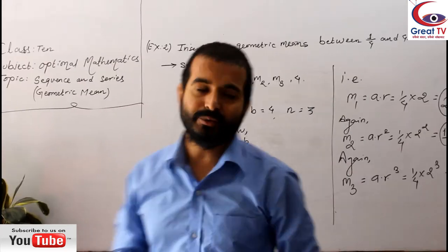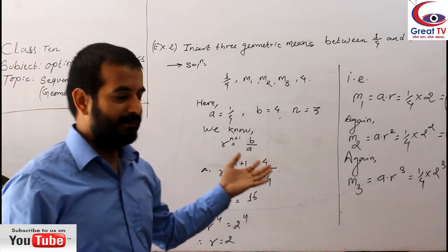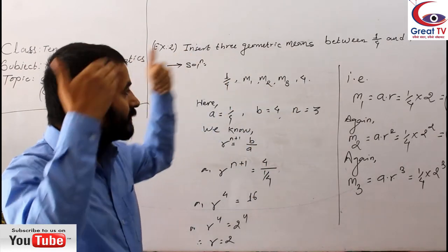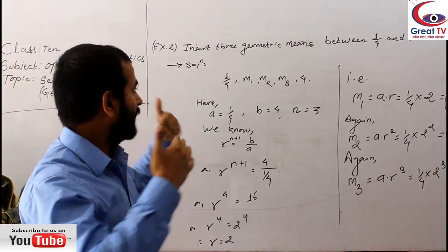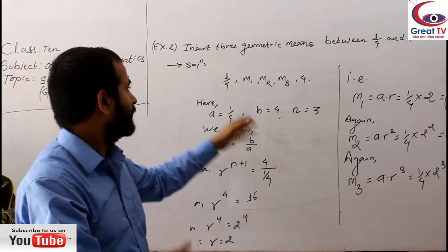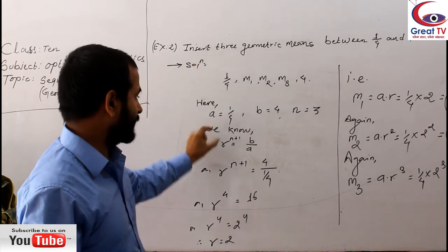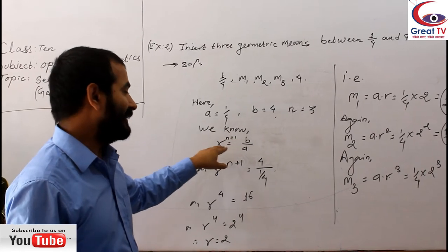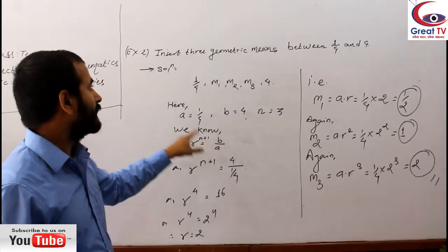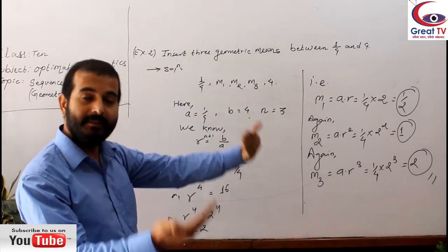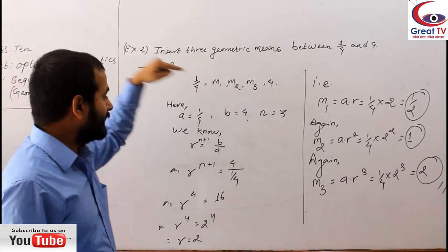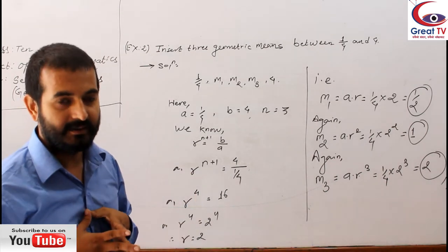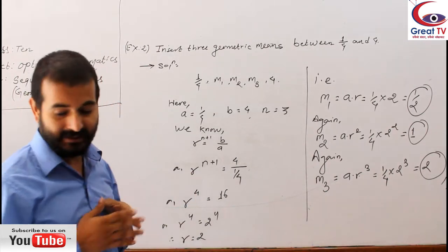So my dear students, how do you got this? So if you have still confused, please just rewind the previous video, previous class, and come to this class. And you shouldn't forget when you use this formula R^(N+1) = B/A, it is not used every time. When you have to insert multiple means, then you should know the common ratio. In that case only, this formula is applicable.